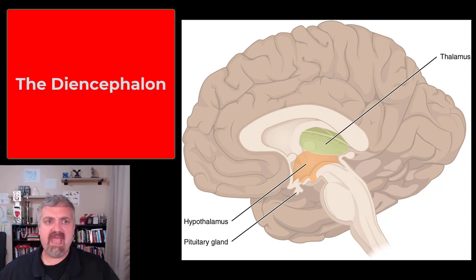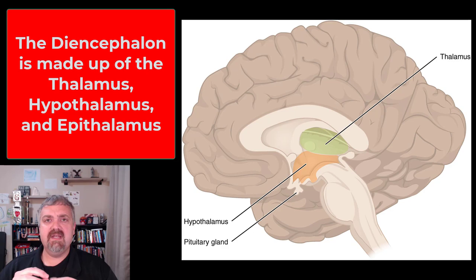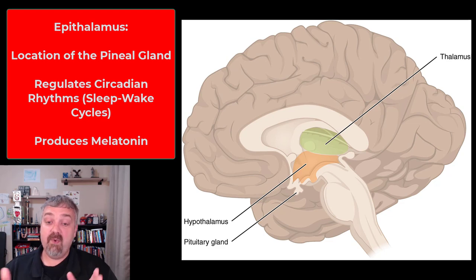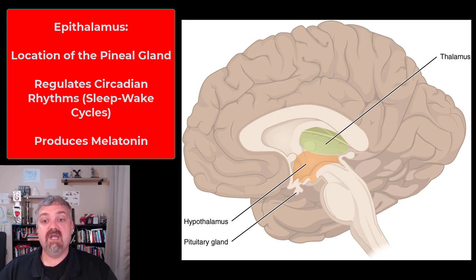Next, right above that, we have the diencephalon — and we'll cover these in great detail later. The diencephalon is made of three parts: the thalamus, the hypothalamus, and what you can't see here is called the epithalamus. The epithalamus is where the pineal gland is, which plays a role in your circadian rhythms because of the production of melatonin. We cover that with the endocrine system.